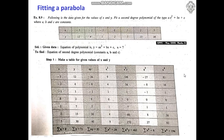Now let us take an example: given data for X and Y, fit a second degree polynomial of the type Y = AX² + BX + C where A, B, C are constants. The data is: X = −3, Y = 12; X = −2, Y = 4; X = −1, Y = 1; X = 0, Y = 2; X = 1, Y = 7; X = 2, Y = 15; X = 3, Y = 30. The number of observations N = 7.